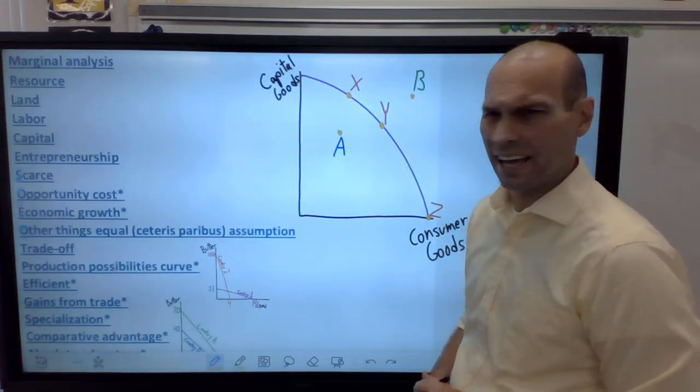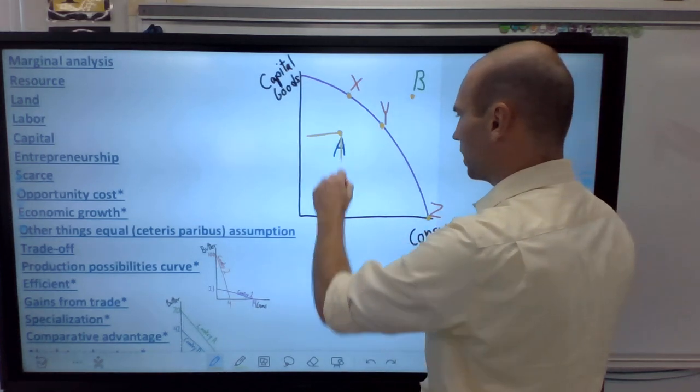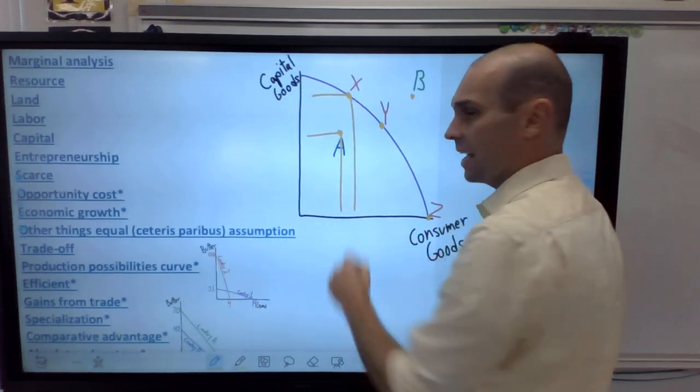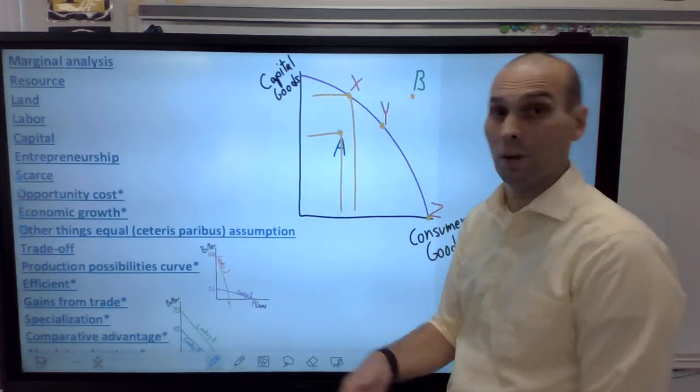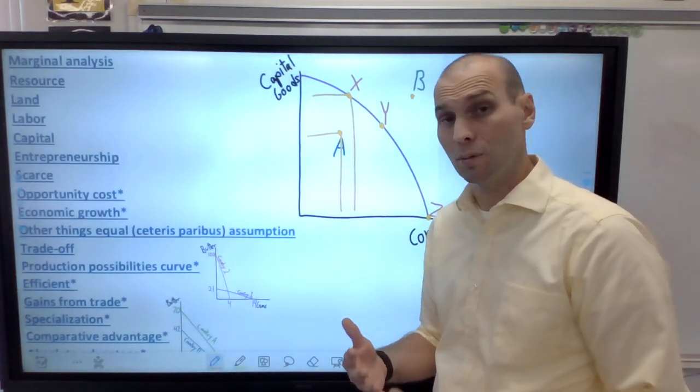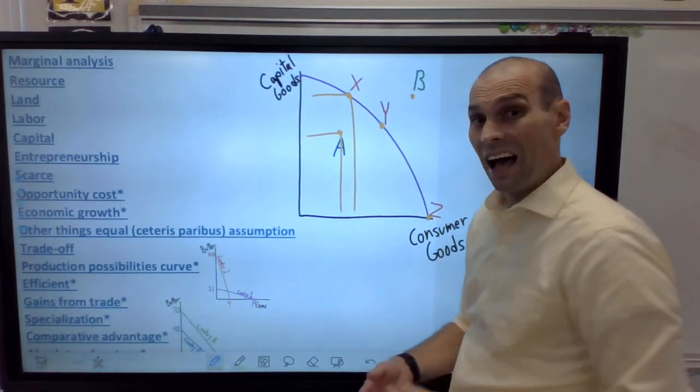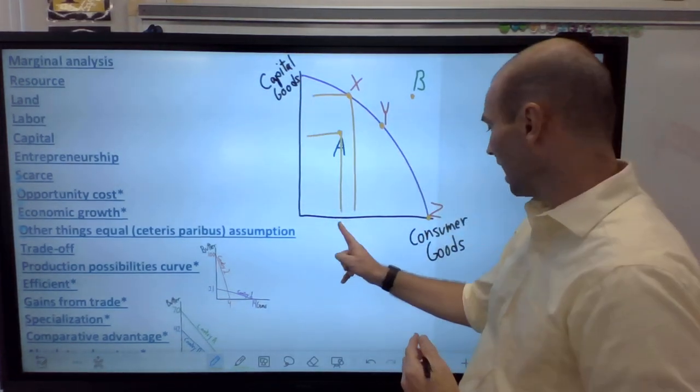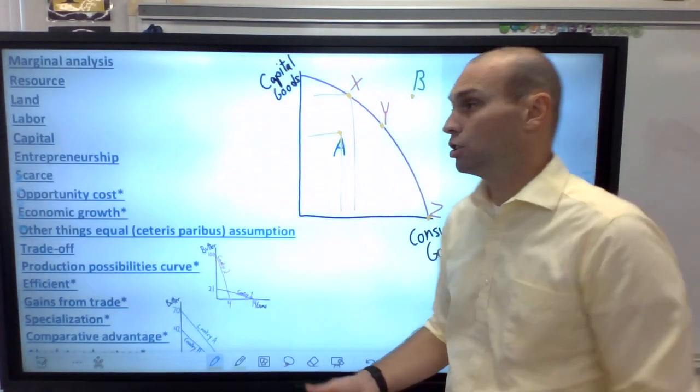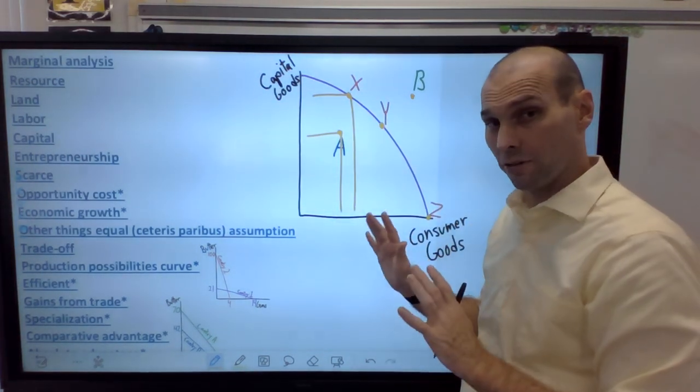What it represents as a production possibilities frontier or curve, same thing, is a frontier is a limit. It's the edge of what we can do. So if we're on the frontier, that means we are efficient. What does that mean? Efficient means we're employing all our resources to the maximum effect. So nothing sitting there, no workers are just twiddling their thumbs, no machines and capital not being used, no land is just sitting out in a field to rot.